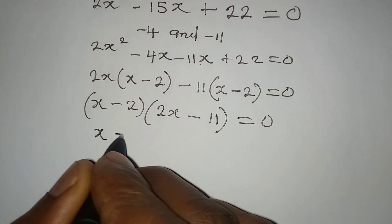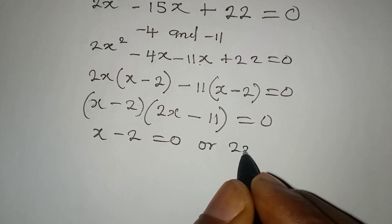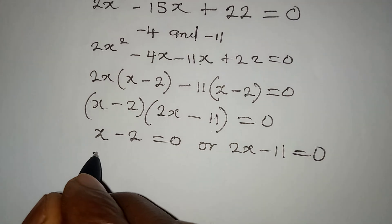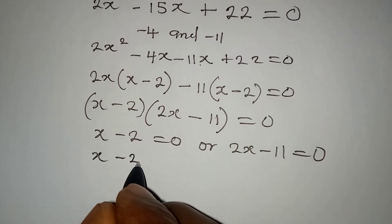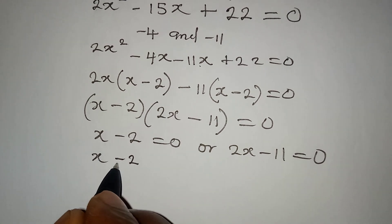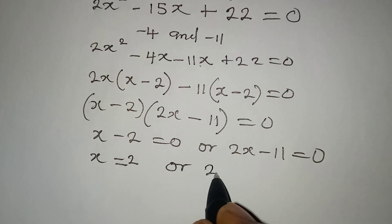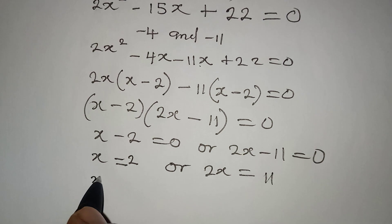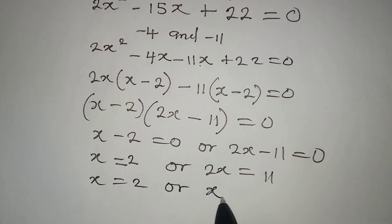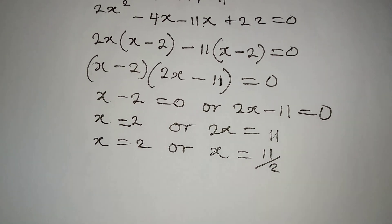This means that either x minus 2 equals 0, or 2x minus 11 equals 0. So x is equal to 2, or 2x equals 11, meaning x is equal to 11 over 2. We now have two values of x.